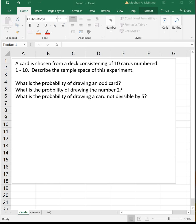This video is going to look at examples of probability problems. First example, a card is chosen from a deck consisting of 10 cards numbered 1 through 10. Describe the sample space of this experiment.